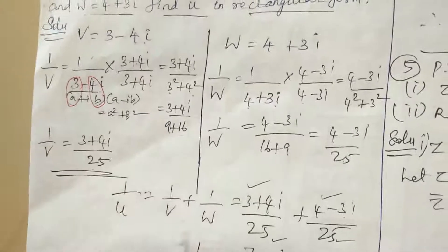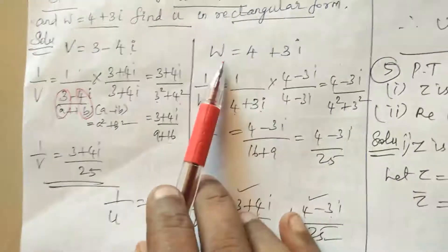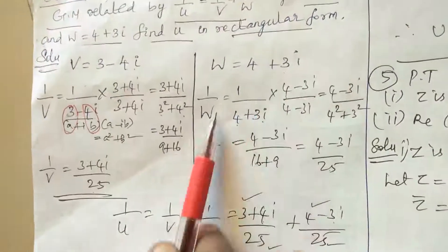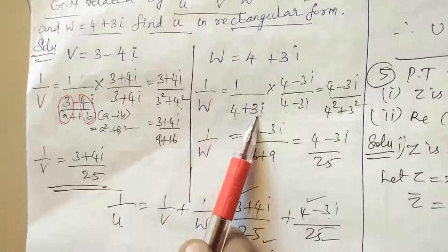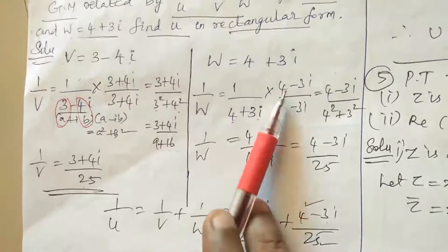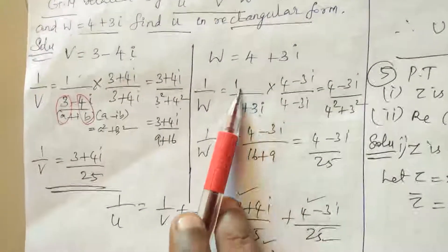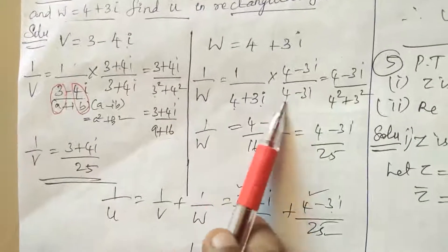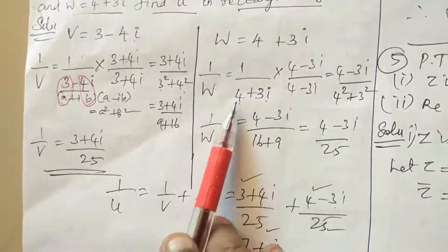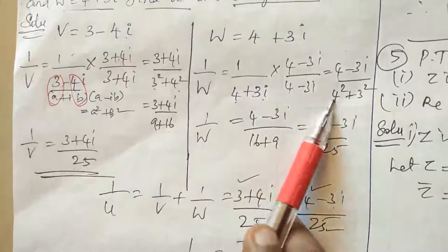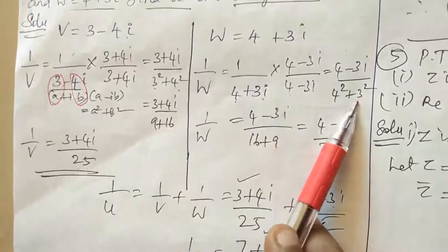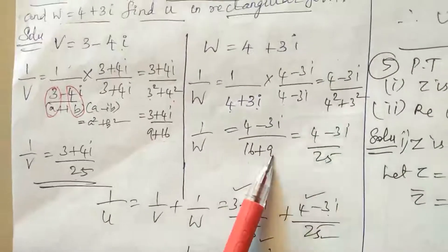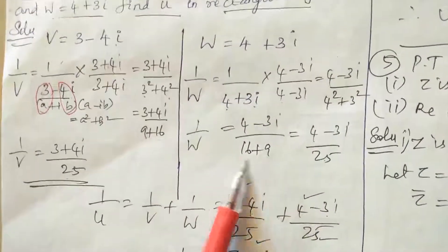Now for 1/W: W equals 4 plus 3i. So 1/W equals 1/(4 plus 3i), multiplied by conjugate (4 minus 3i)/(4 minus 3i). The numerator is 4 minus 3i. The denominator is 4 squared (16) plus 3 squared (9) equals 25. Therefore 1/W equals (4 minus 3i) divided by 25.